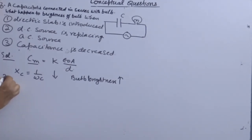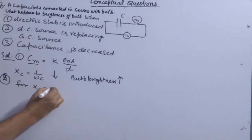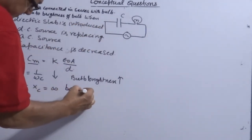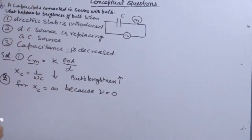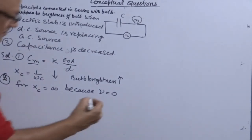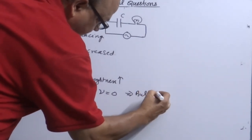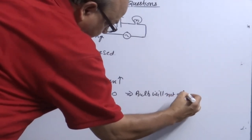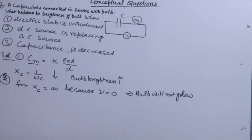When you apply a DC source, XC is equal to infinite because frequency is zero. A capacitor is a real blockade for DC. So the bulb will not glow, because it offers infinite resistance to DC and there will be no flow of current.